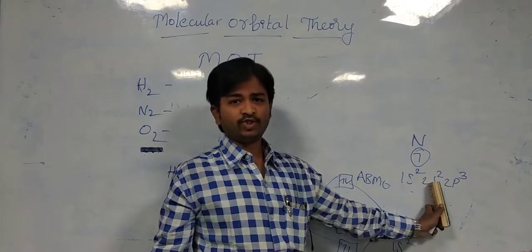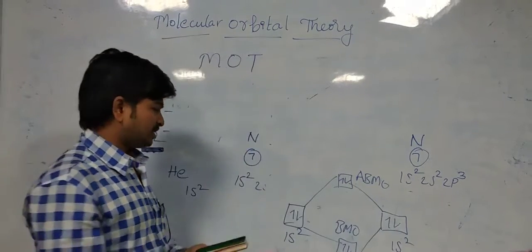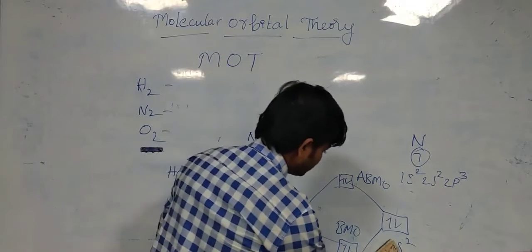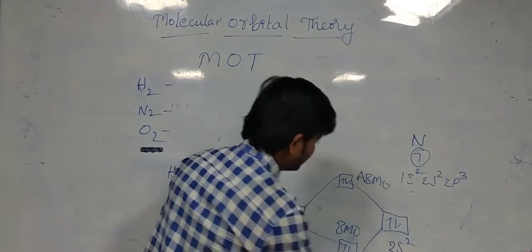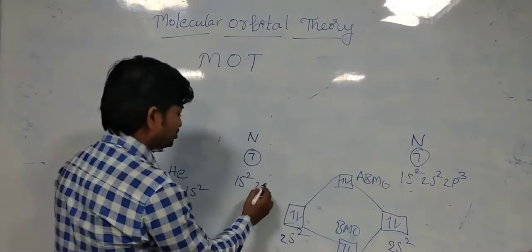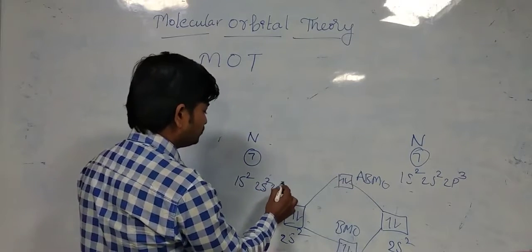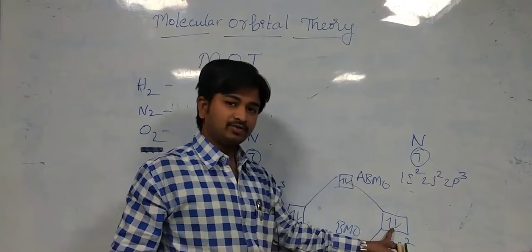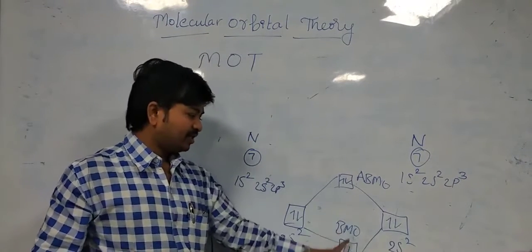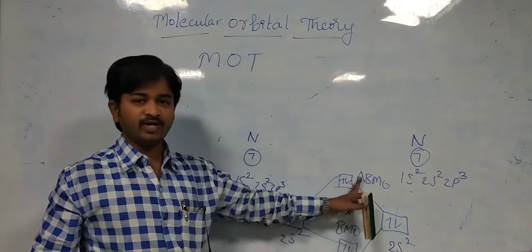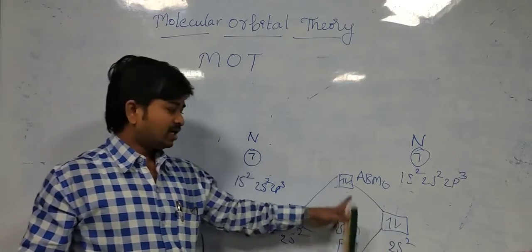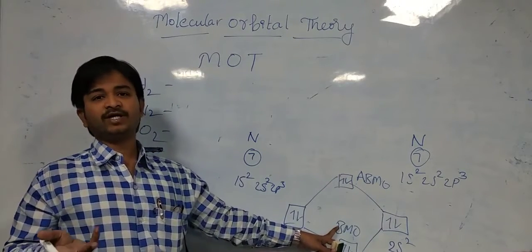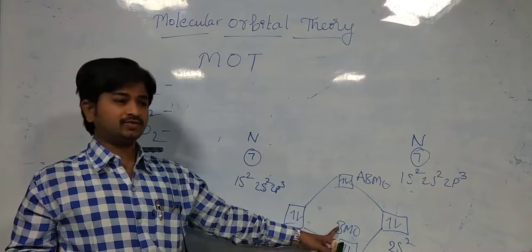Next, let us go to the 2s2 position. The 2s2 position works the same way. In 2s2, there are 2 electrons, and in the other nitrogen's 2s2, there are also 2 electrons. One electron goes to BMO, the other to ABMO. Here also, both have the same energy, so we cannot get bond formation in 2s2 either.